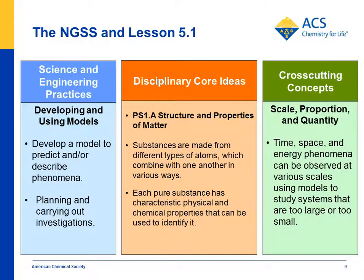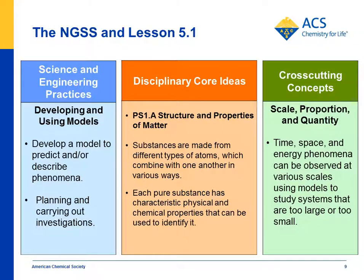Looking at the foundation boxes, students have developed a model to describe phenomena and they planned and carried out an investigation. For structure and properties of matter, students have seen that substances are made from different types of atoms. They've looked at water and alcohol and that these have different physical properties in that they evaporate at different rates. For the crosscutting concept of scale, proportion, and quantity, students have looked at the molecular-level explanation — the polarity difference between water and alcohol — to explain a macroscopic phenomenon: the different rate of evaporation.